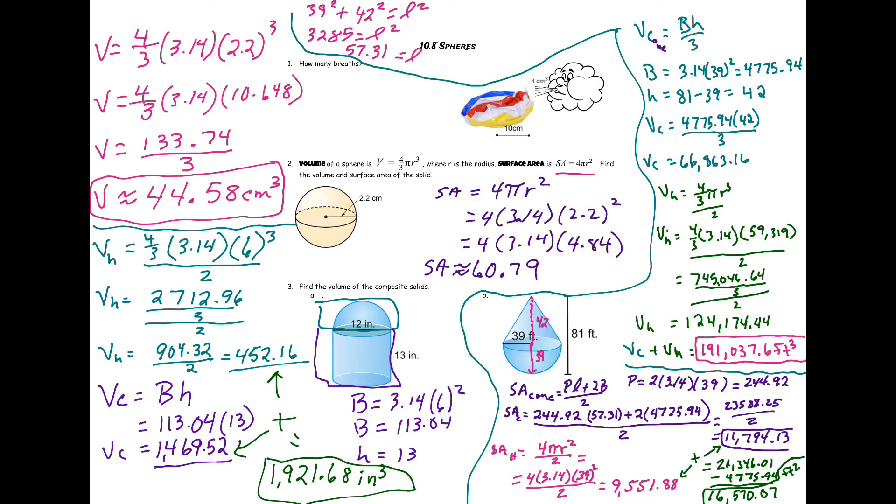Surface area is a little bit tougher. Remember with surface area, we have to use slant height of a cone, not the height of it. We want the slanted height, so we do have to do Pythagorean theorem to get that answer. I did my Pythagorean theorem over here. So 39 squared plus 42 squared equals our slant height squared, which comes to 57.31.